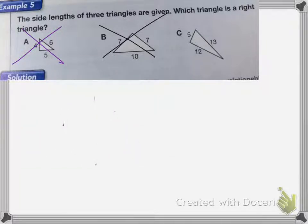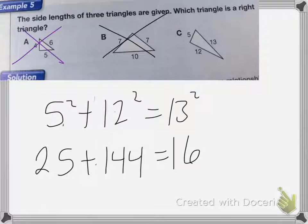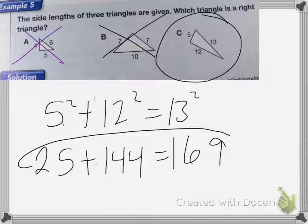So we'd try C, and I'd have 5 squared plus 12 squared should equal 13 squared. So that's 25 plus 144 should equal 169. And it does! So C is my right triangle. And that's it for this lesson!